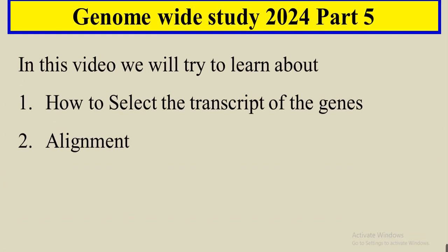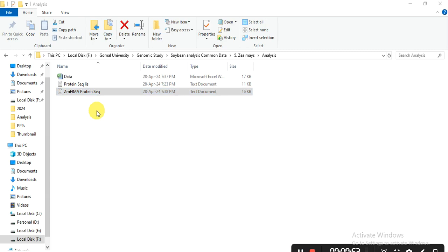In this video we will learn how we can select the transcript of the genes, because most genes have more than one transcript and we need to take only one transcript. If two transcripts don't have any difference — even one amino acid difference — we will select only one transcript and then do the alignment.